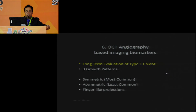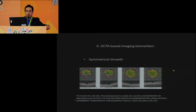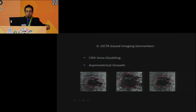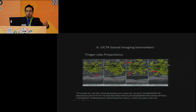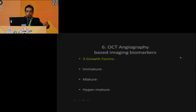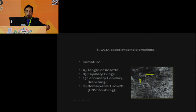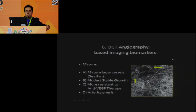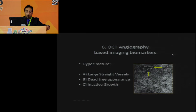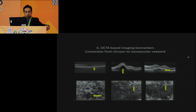Three CNV growth patterns exist: symmetric increase, asymmetric increase (not growing equally in all directions), and finger-like pseudopodial projections. Growth forms include immature, mature (more stable, resistant to anti-VEGF), and hyper-mature (large straight vessels, dead tree appearance, inactive growth). These are further biomarkers of neovascularization activity.